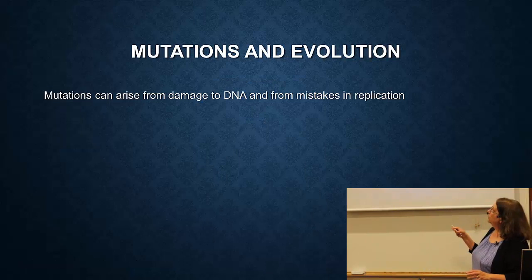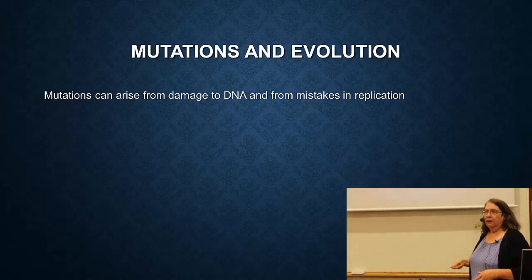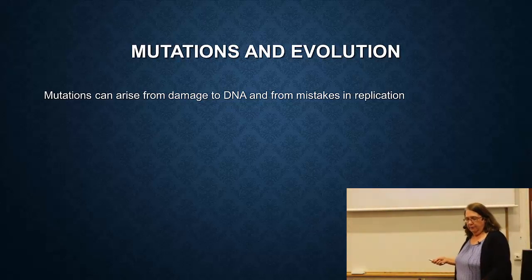Mutants can arise from the original population, and genetic variation can arise from damage to DNA or mistakes during DNA replication.